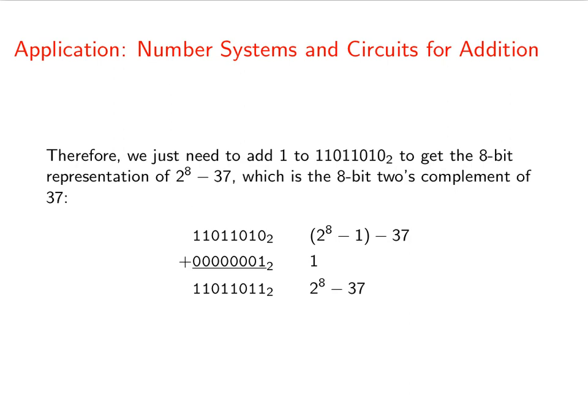So remember that the 2's complement of 37 is the binary representation of 2 to the 8th minus 37. So that's why we're adding the 1 back in, because we didn't really want this 1 to begin with.